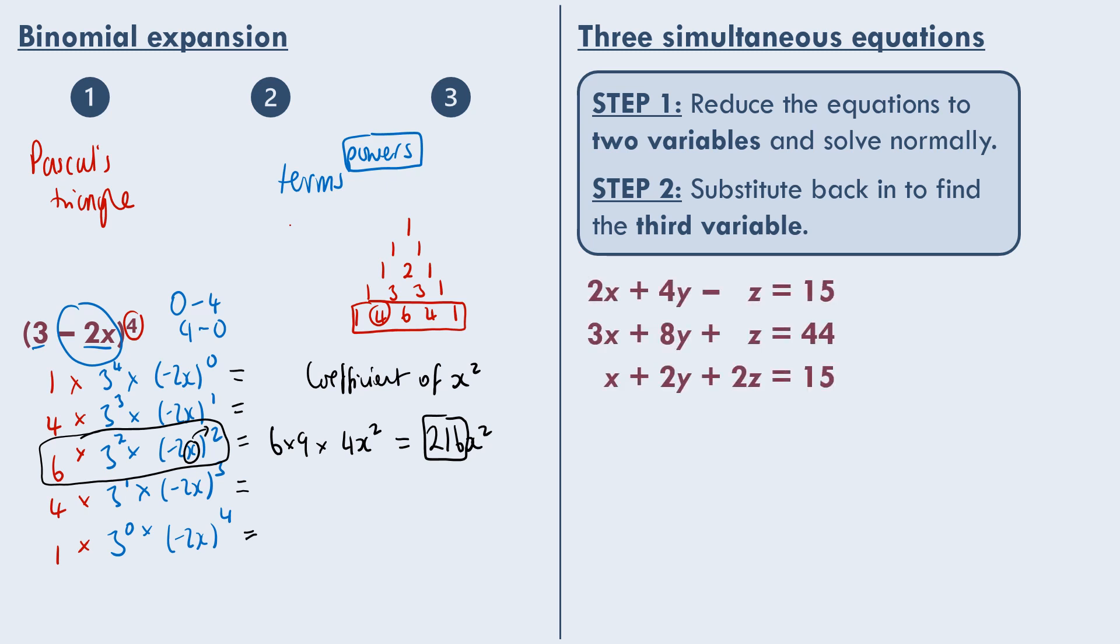Let's say we have these three equations here. What I like to do first is to label them, so 1, 2 and 3. Then you need to take two pairs of the equations, so let's say 1 and 2, and then 2 and 3. You need to eliminate one variable from them. So let's say you want to eliminate z. We can add 1 and 2 together. That gives us 5x plus 12y for the z to cancel. We end up with 59 on the other side. For 2 and 3 we can eliminate z again. So let's say two lots of equation 2 take away equation 3.